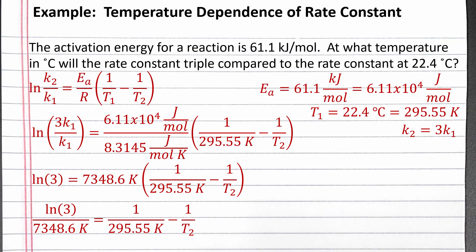Next, we can divide both sides by 7,348.6 Kelvin. Then we can rearrange the equation to get 1 over T2 alone on the left side of the equation. To do this, we add 1 over T2 to both sides and subtract the natural log of 3 divided by 7,348.6 Kelvin from both sides.